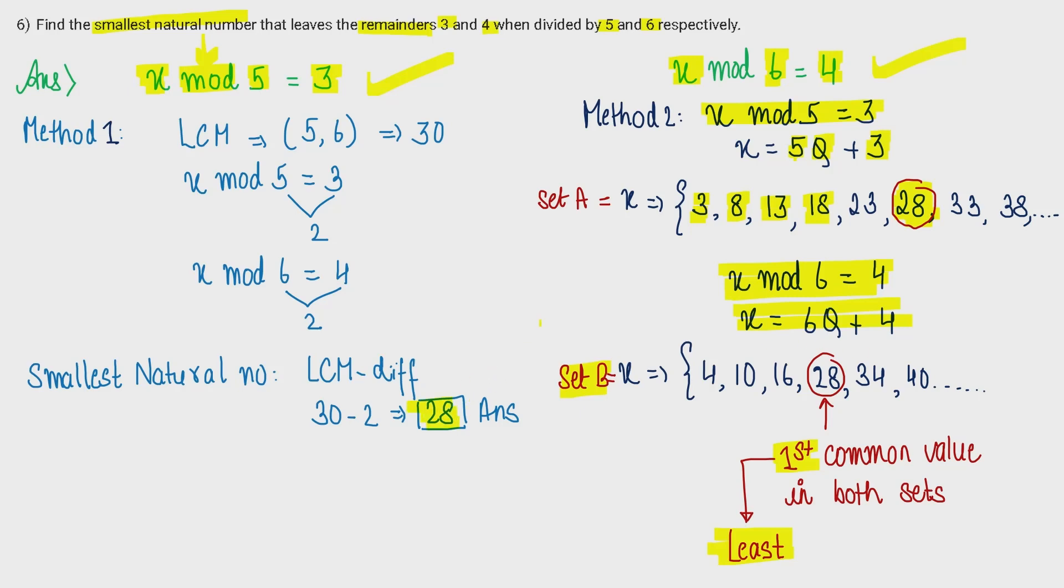The answer is 28. Now let's talk about the theoretical method. We take the LCM of both the modulus, that is 5 and 6. Modulus is just another name of divisor. Their LCM is 30. Now what we need to do is write both expressions and find the difference between the divisor and remainder of each equation. In this case I got 2. What you need to do is LCM minus the difference, that is 30 minus 2, you will get the answer. This is the formal approach, this is the practical approach, whichever suits you, go with it.